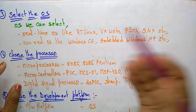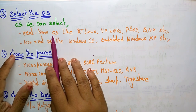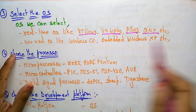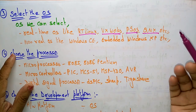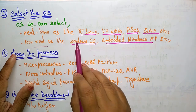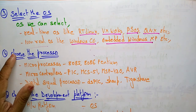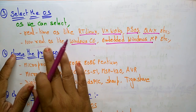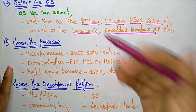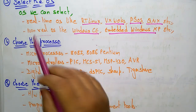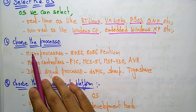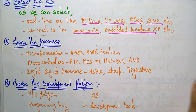The third step is to select the operating system. Real-time operating systems include RT Linux, VxWorks, pSOS, and QNX. If you are working on a non-real-time system, go for Windows CE or embedded Windows XP. Windows CE and Windows XP work on non-real-time applications, while real-time operating systems are RT Linux, VxWorks, and pSOS. Choose one based on whether your application is real-time or not.